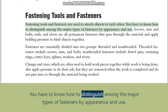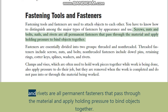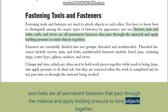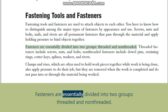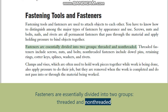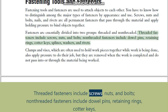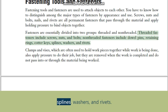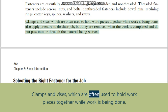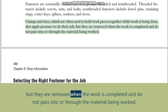Fastening tools and fasteners are used to attach objects to each other. You need to know how to distinguish among the major types of fasteners by appearance and use. Screws, nuts, bolts, nails, and rivets are all permanent fasteners that pass through the material and apply holding pressure to bind objects together. Fasteners are divided into two groups: threaded and non-threaded. Threaded fasteners include screws, nuts, and bolts. Non-threaded fasteners include dowel pins, retaining rings, cotter keys, splines, washers, and rivets. Clamps and vises hold workpieces together while work is being done but are removed when the work is completed and do not pass into or through the material.